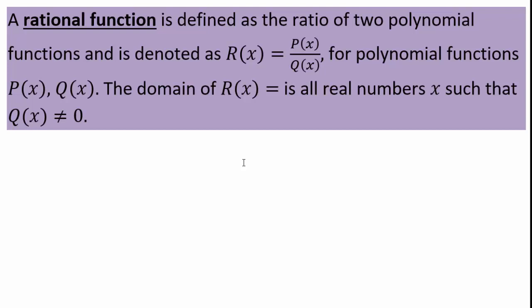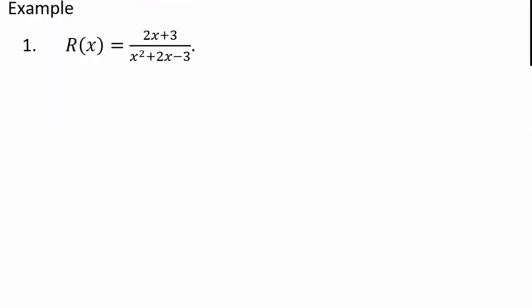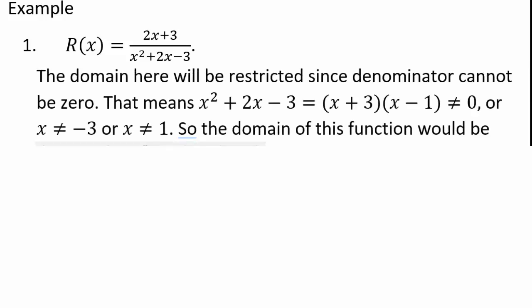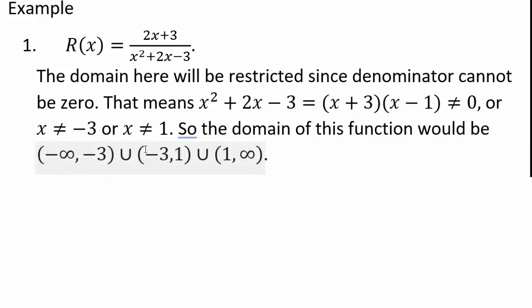We'll spend a little more time on rational functions later. Here's an example: 2x plus 3 over x squared plus 2x minus 3. The denominator factors as x plus 3 and x minus 1, so you cannot have x equals 1 or negative 3. The domain of this function would be all real numbers except negative 3 and 1, or in interval notation: negative infinity to negative 3, negative 3 to 1, and 1 to infinity.